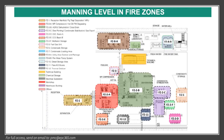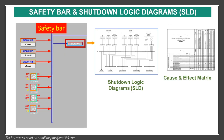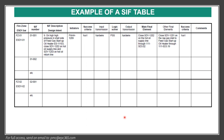For the manning level, we have to have a fire zone defined. For example, the operator should specify how many people are present, and in case of an accident, how many people could be injured or killed. Regarding the shutdown logic diagram, we have to have the sensor, what executive action is given — we can see this in the shutdown logic diagram, and also in the cause and effect matrix.